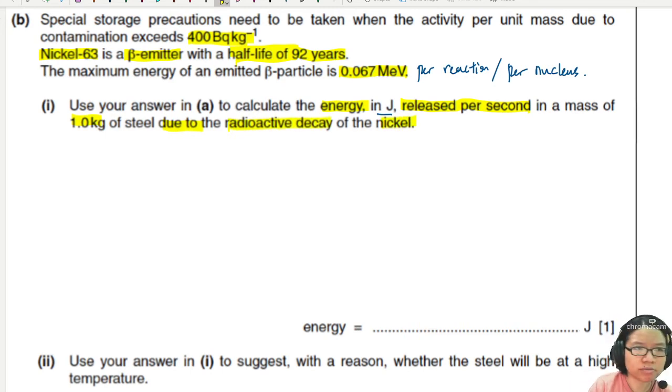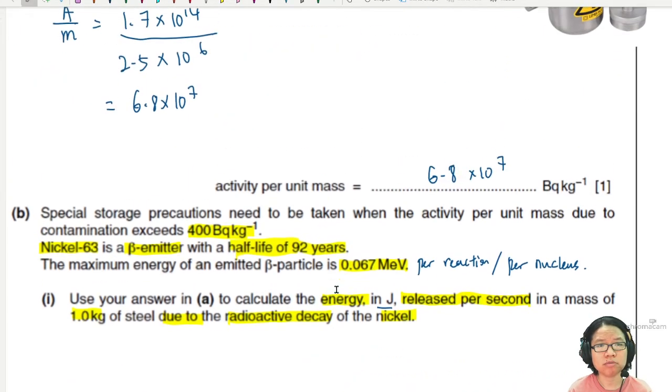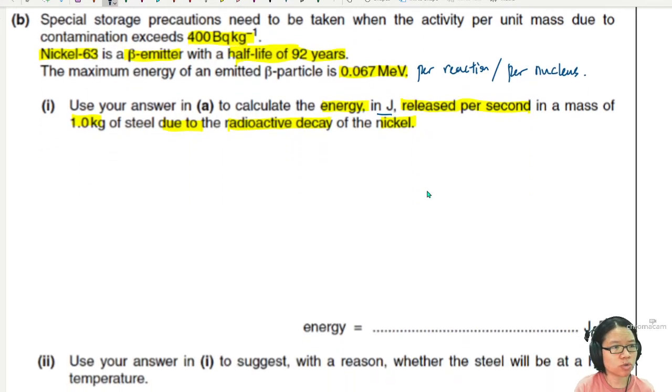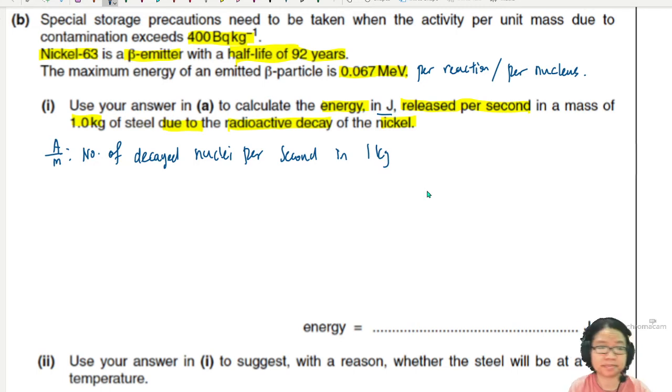Using your answer in A to calculate the energy in joule, release per second. So we kind of want to look for energy release per second in the mass of 1 kg of steel due to the radioactive decay of nickel. So a lot of information. But I think in this part, we are not talking about the contamination first. Because we are trying to find how much energy is released in one second. So previously, we calculated already the activity per unit mass is this much.